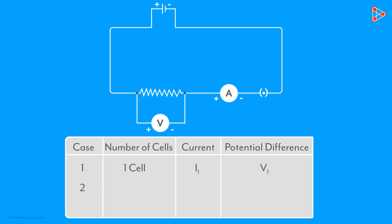In the second case, connect two cells in the circuit and note the respective readings of the ammeter and the voltmeter. Don't forget, the ammeter gives the value of current through the nichrome wire and the voltmeter gives the potential difference across the nichrome wire. Let's say the readings are I₂ and V₂ respectively.